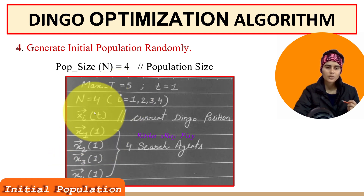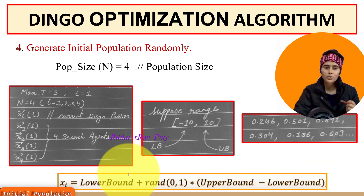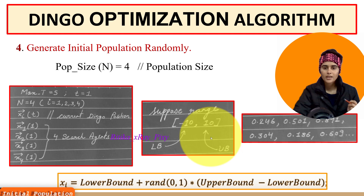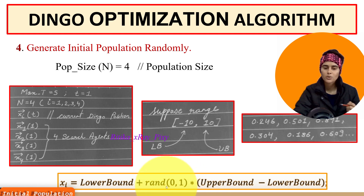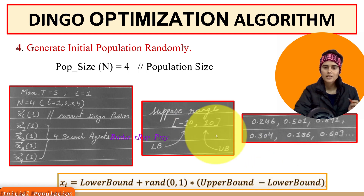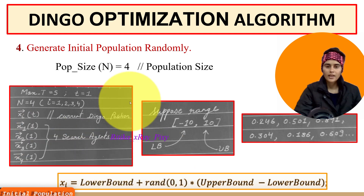We randomly initialize the position for each search agent using the equation: lower bound + random value × (upper bound − lower bound). Suppose the range is −10 to 10: lower bound = −10, upper bound = 10. Random values are uniformly distributed between 0 and 1, for example 0.246 or 0.501. Using this equation we assign a position for each agent randomly in the search space, keeping in mind the dimension for each agent.